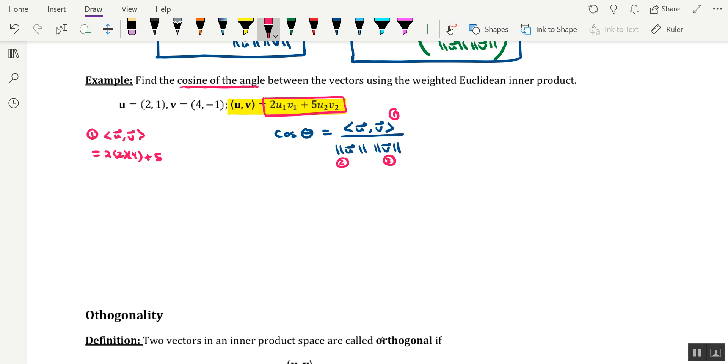Added to 5 times the second component of u, which is 1, times the second component of v, which is negative 1. And so what we're looking at here is 16 minus 5, which is 11. So let's replace that numerator over there with 11.